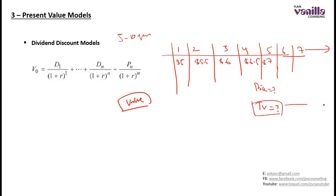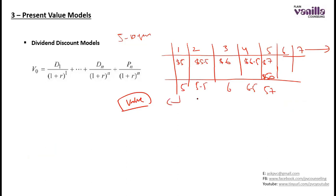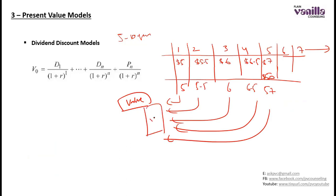Terminal value means the present value of all the remaining cash flows at the fifth year. So for example, if I find out that at the end of fifth year the terminal value or price of the asset will be $50, I can sum up all these cash flows: $50, $6.5, $6, $5.5, and $5.